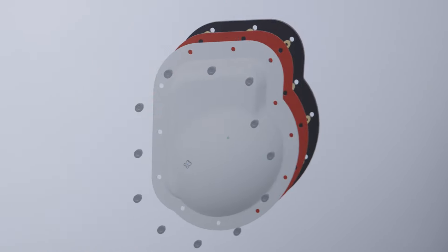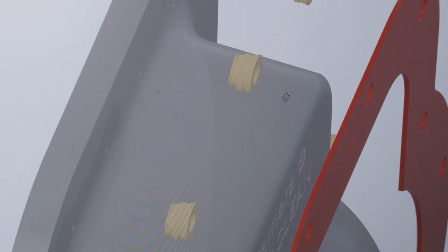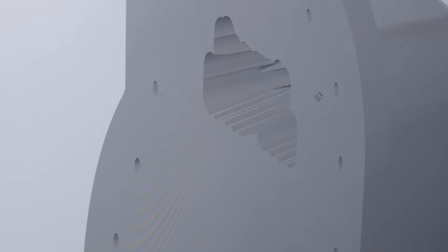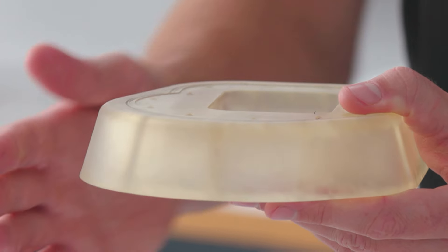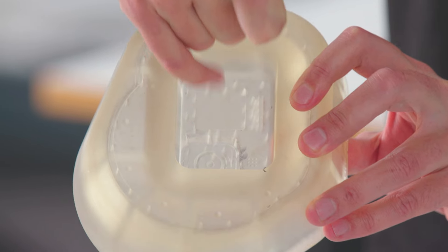For best results and easy part removal, there's a few considerations you want to take into account when designing for thermoforming. We've got a really extensive guide on how to design for thermoforming on our website. The main things to consider are draft angles, undercuts, and air holes.